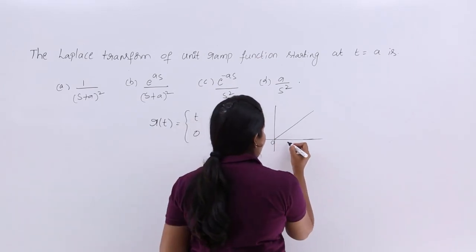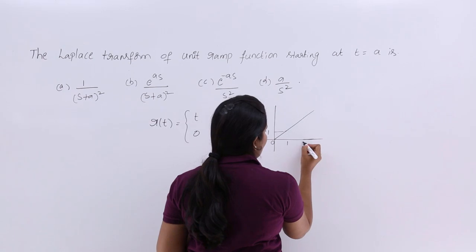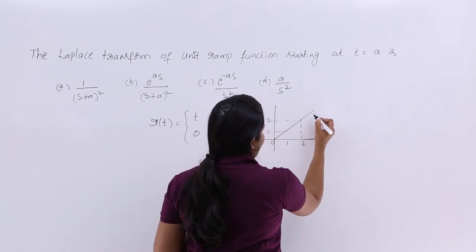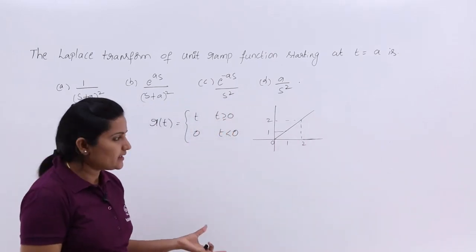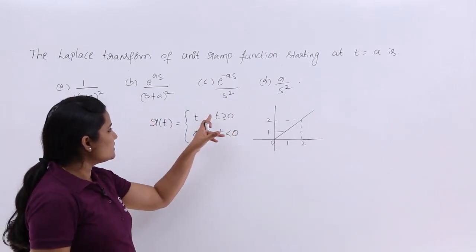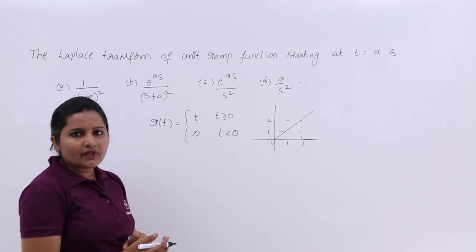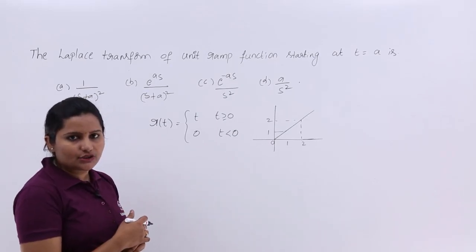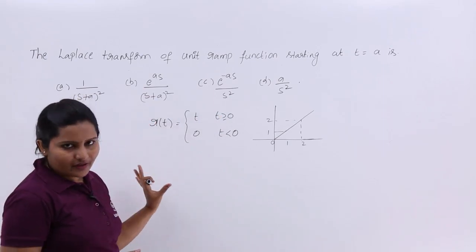At T equal to 0 the amplitude is 0; at T equal to 1 the ramp is equal to 1; at T equal to 2 the ramp is equal to 2; at T equal to 3 the ramp amplitude is equal to 3. That means at time T, your amplitude of the ramp signal is also equal to T. This is the general R(T).